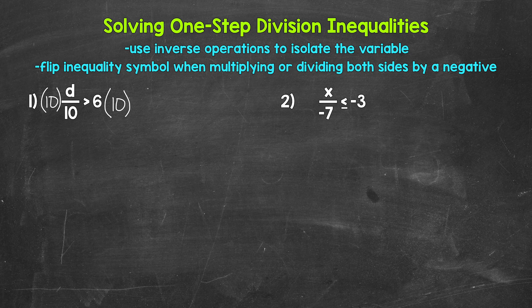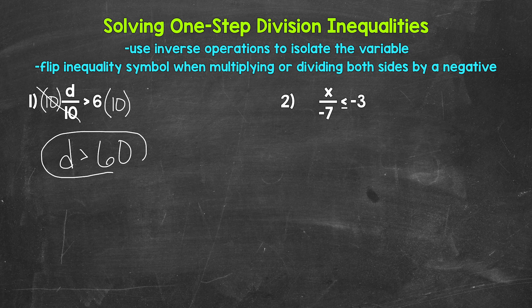On the left side, these tens cancel each other out, so d is now isolated. We have d is greater than, and then on the right side, 6 times 10 gives us 60. So we have d is greater than 60. Any value greater than 60 is a solution of this inequality — it makes it true.